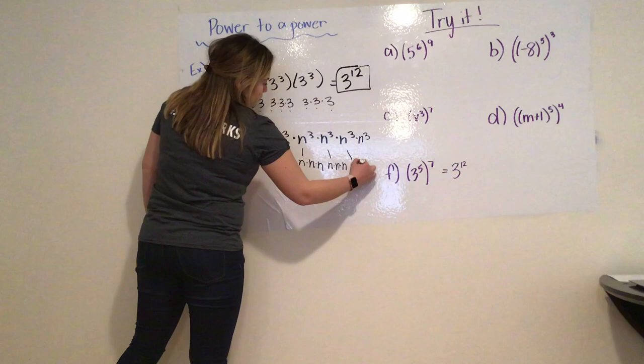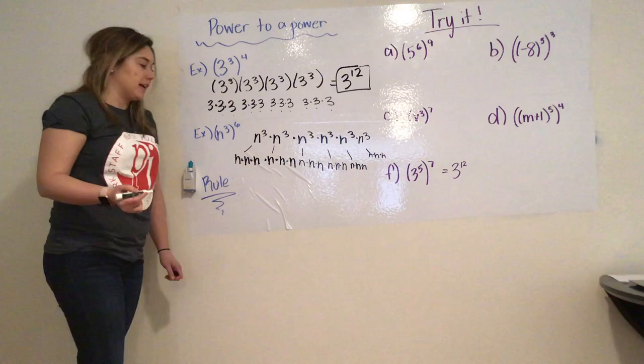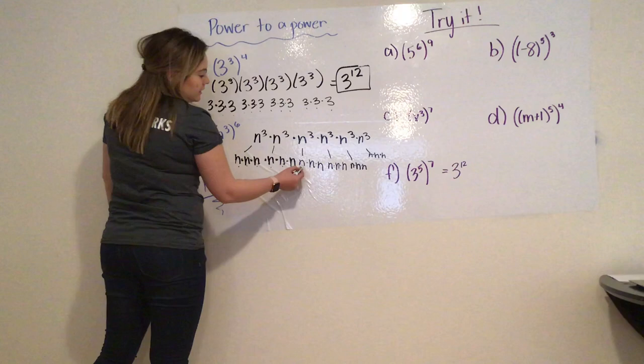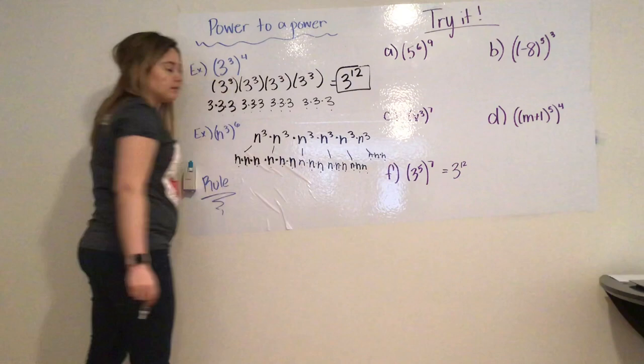Running out of room. So if I count it all up, I get 1, 2, 3, 4, 5, 6, 7, 8, 9, 10, 11, 12, 13, 14, 15, 16, 17, 18. So this is n to the 18th.